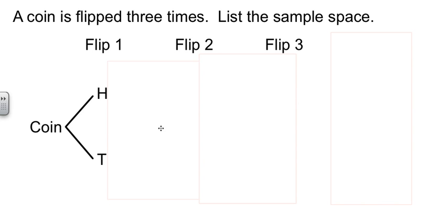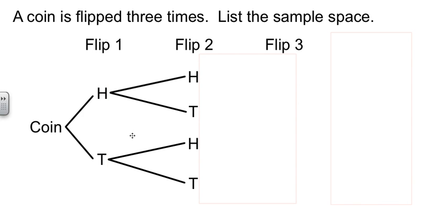Now, regardless of what we got in flip one, when we flip it again, we'll still either get heads or tails. So if we got heads the first time, we could get either one, and if we got tails the first time, we could still get either one.